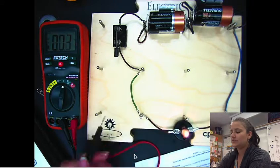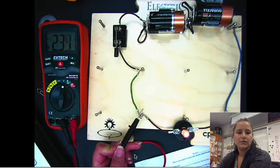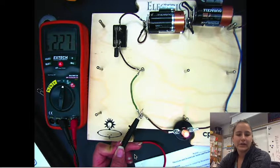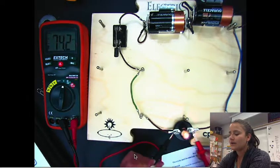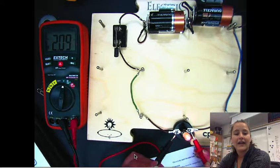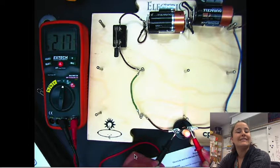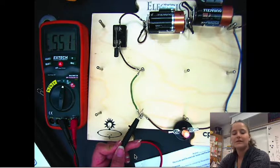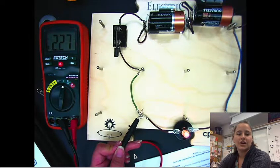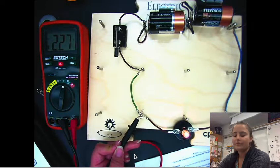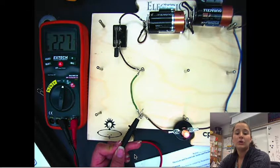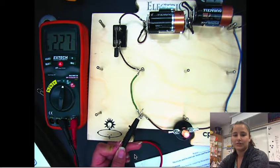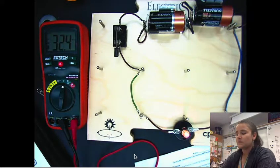Now very similar procedure, same settings, DC volts. I'm gonna collect the voltage across the light bulb, okay? So I connect these across the terminal where the light bulb is and I got 2.27.